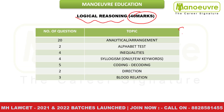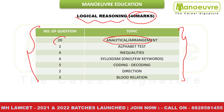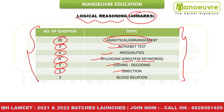Coming to the logical reasoning section — 40 questions. This section, compared to last year, felt one step down to me. Analytical arrangement questions: 20 questions. Alphabet test: 2 questions. Inequality: 4 questions. Syllogism, especially using only and few keywords: also present. Coding decoding: 5 questions.